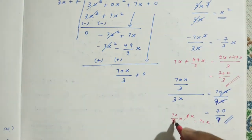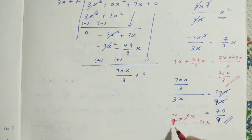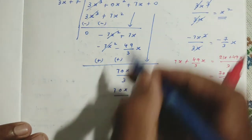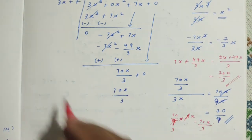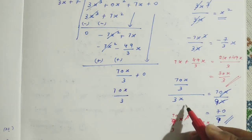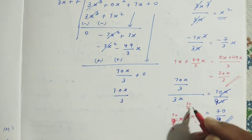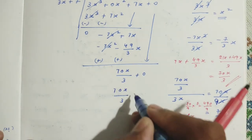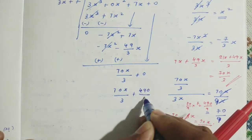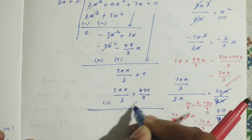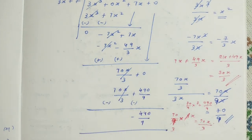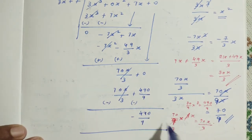We write 70x by 3 here. Then multiplying 70 by 9 into 7 gives 490 by 9, so we write plus 490 by 9. We change the sign to minus and subtract. The 70x by 3 terms cancel, and the remaining term is minus 490 by 9. So the remainder is minus 490 by 9, which is not equal to 0.